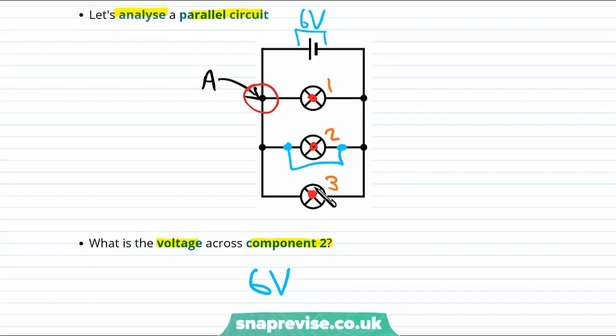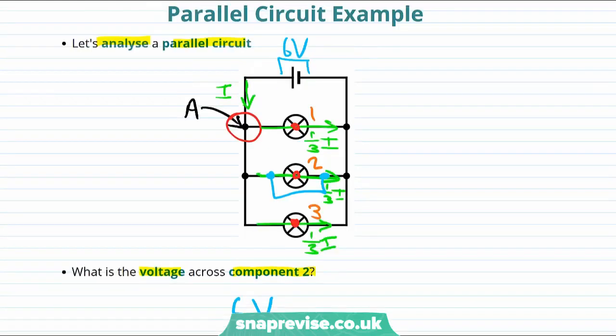And this means that the current going through each of them will be the same. This must mean that of all the current that actually approaches the junction, one third of it will go through each branch. And this means that at junction A, because one third of the current is lost to the first component, the current that must go in this direction will be two thirds of the current.